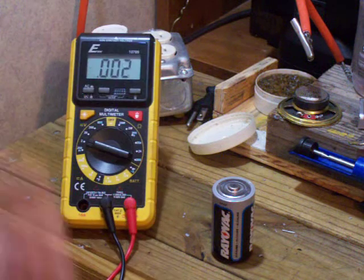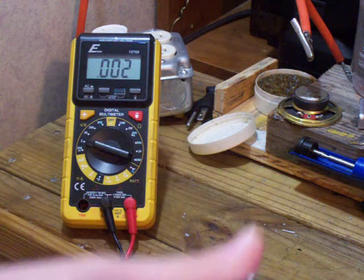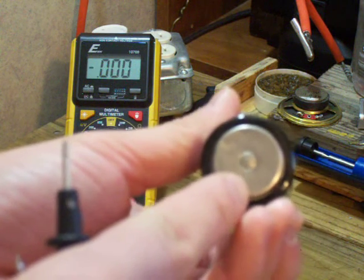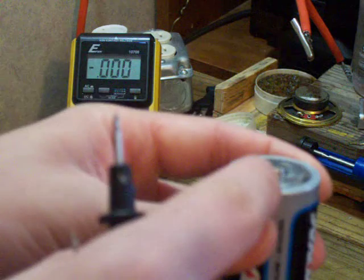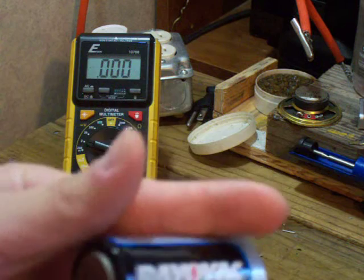On the battery, the smooth side is the ground. The part with the little bump here is the power. So let's go ahead and test it, see what it comes up with.